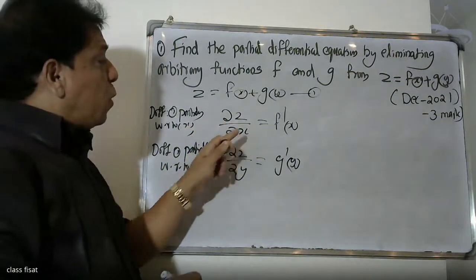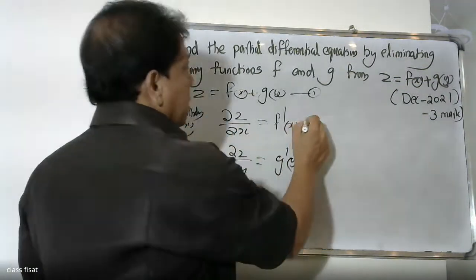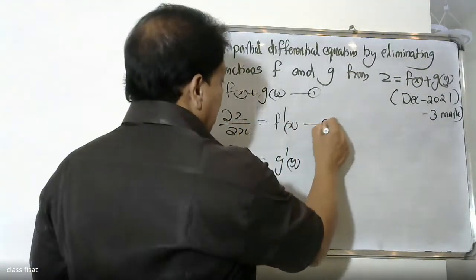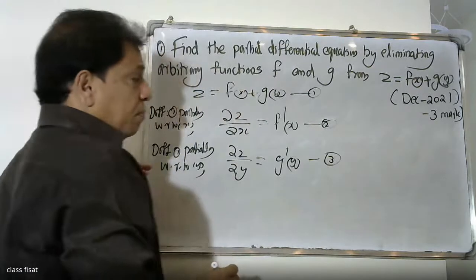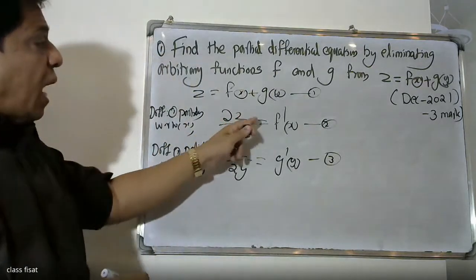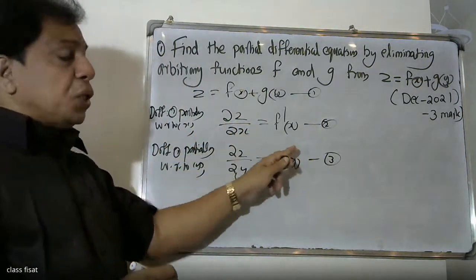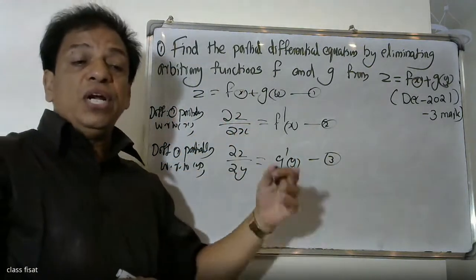So ∂Z/∂x equals f-dash of x — this is equation 2 — and ∂Z/∂y equals g-dash of y — this is equation 3. Now, differentiating equation 2 with respect to y.